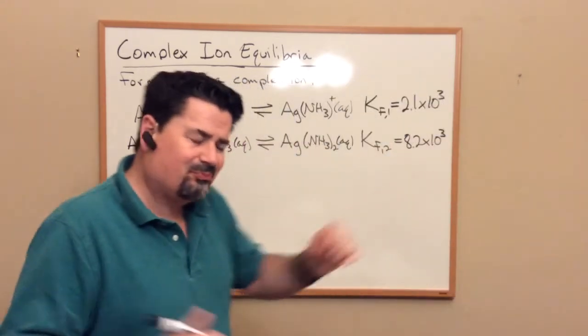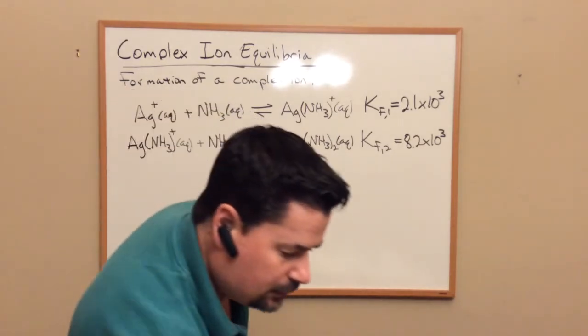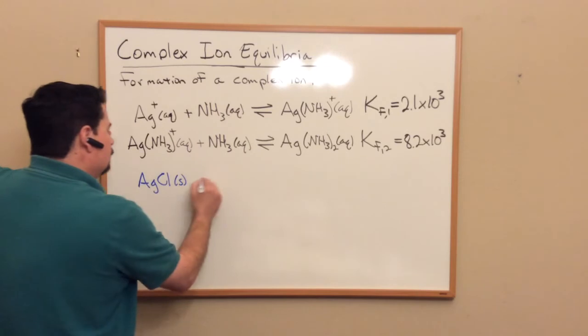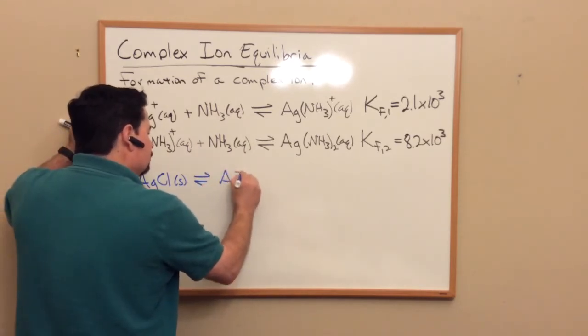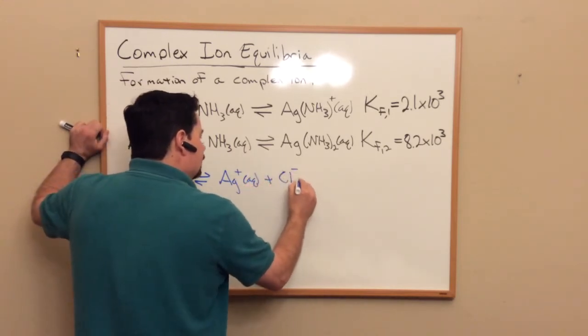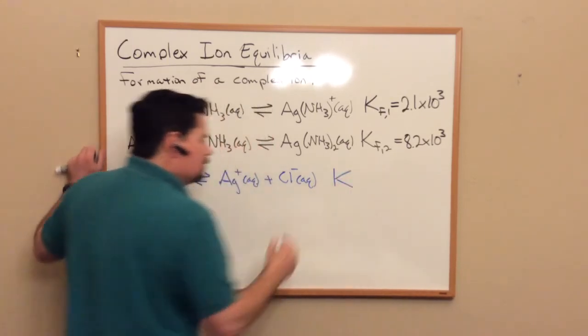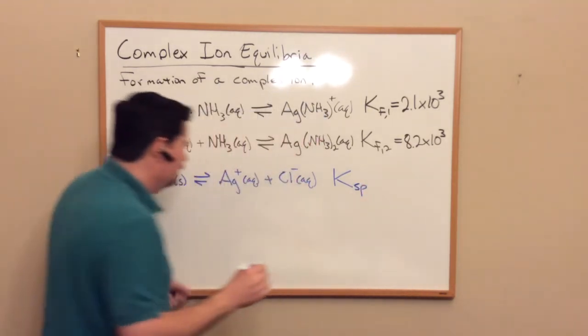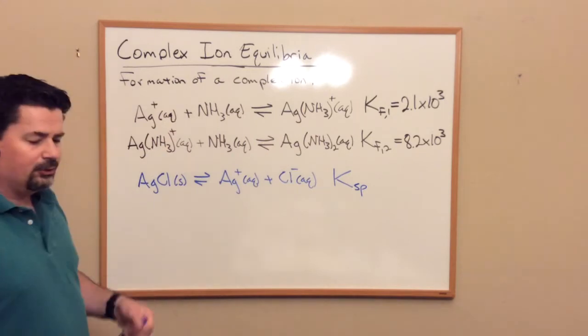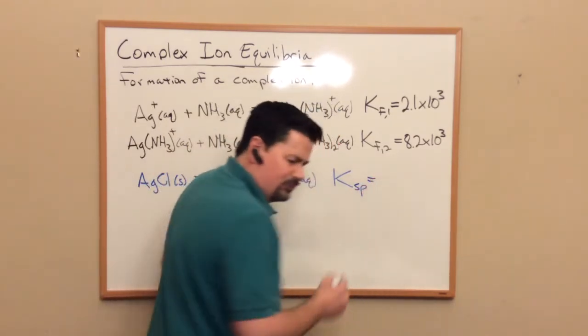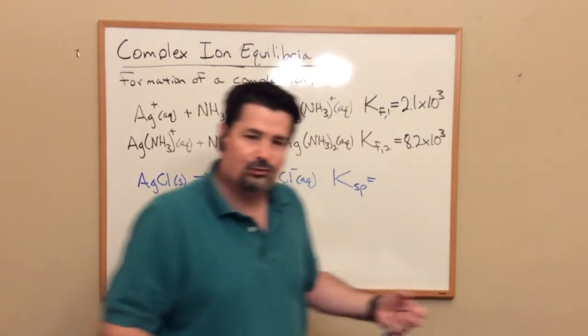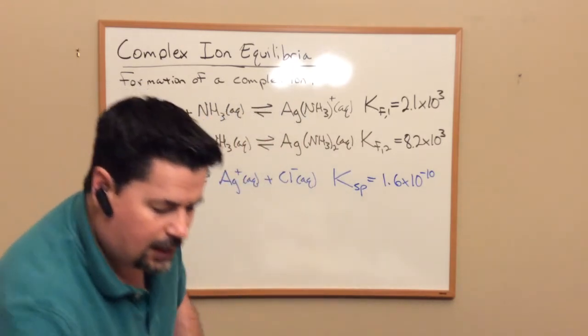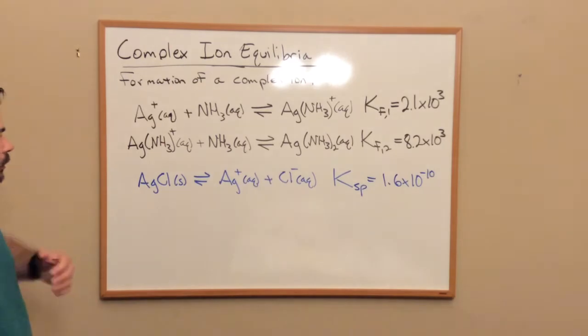Now there's something interesting. Let's combine this with silver chloride. Let me change colors here. So I could have AgCl solid, and that gives us Ag+ aqueous plus Cl- minus. What's our K here? I know you guys can't answer me. Our K here is Ksp, right? Because this is not very soluble. Let me look that up in a table and see that Ksp for silver chloride is like 1.6 times 10 to the minus 10. Yeah, 1.6 times 10 to the minus 10.